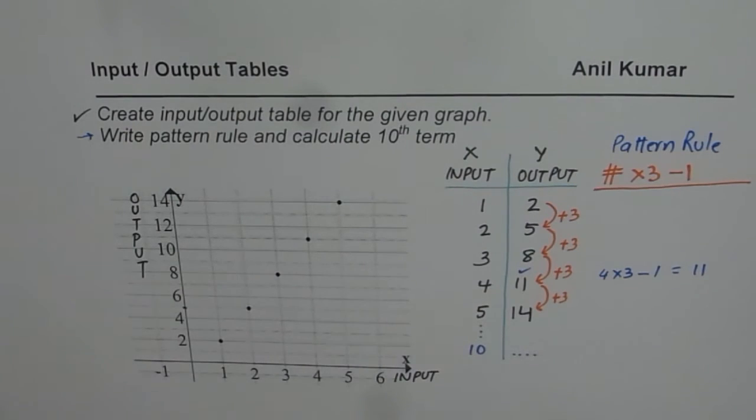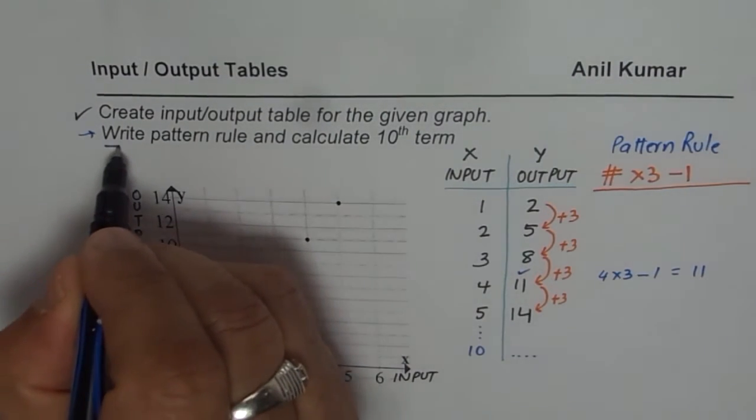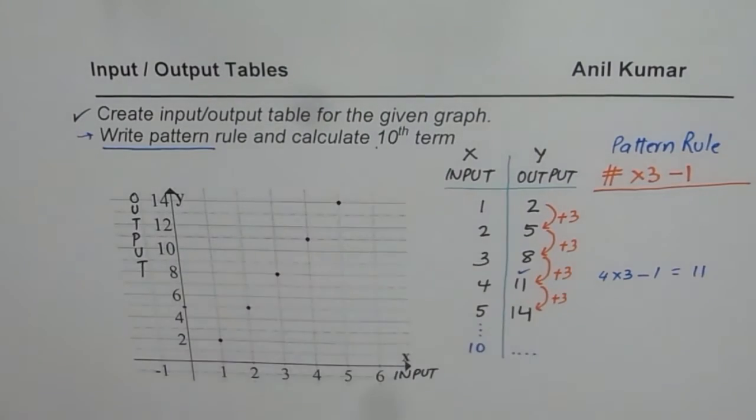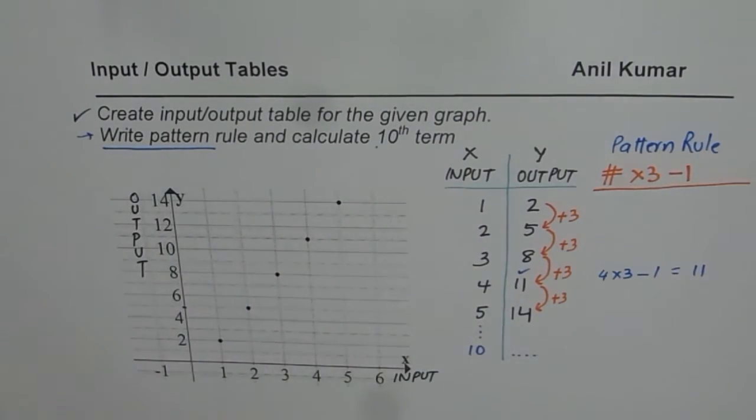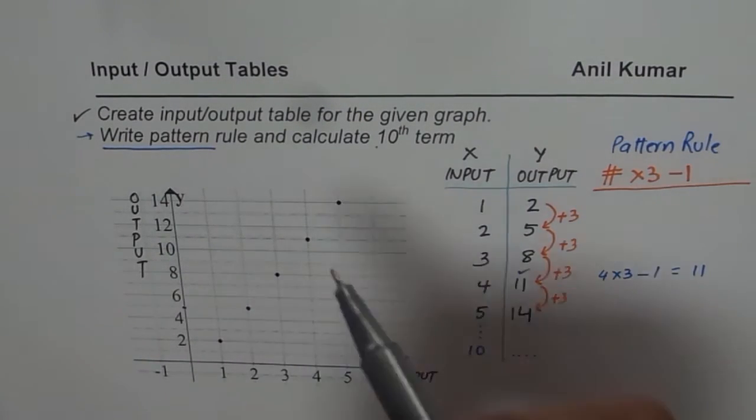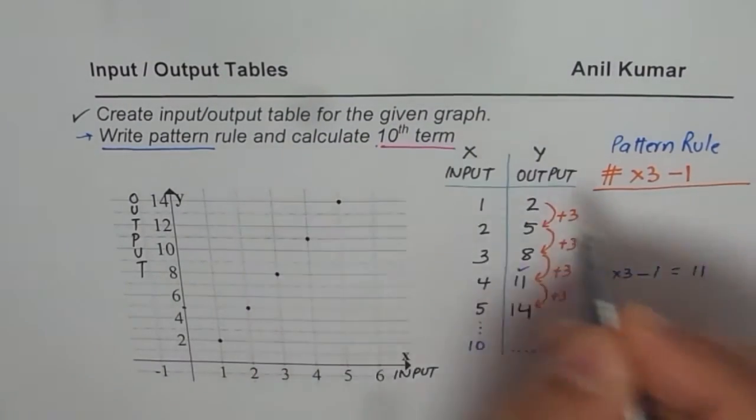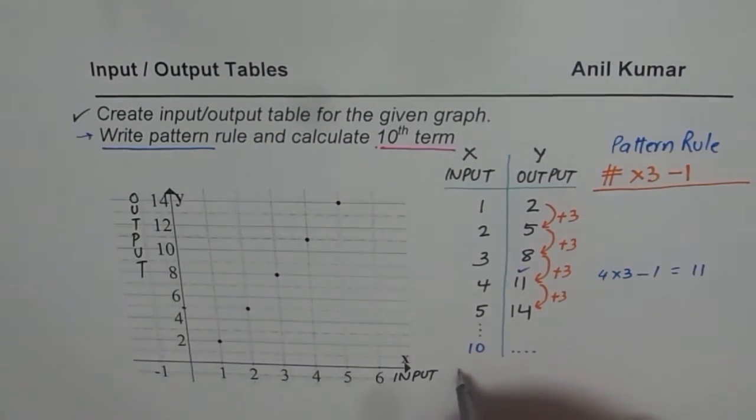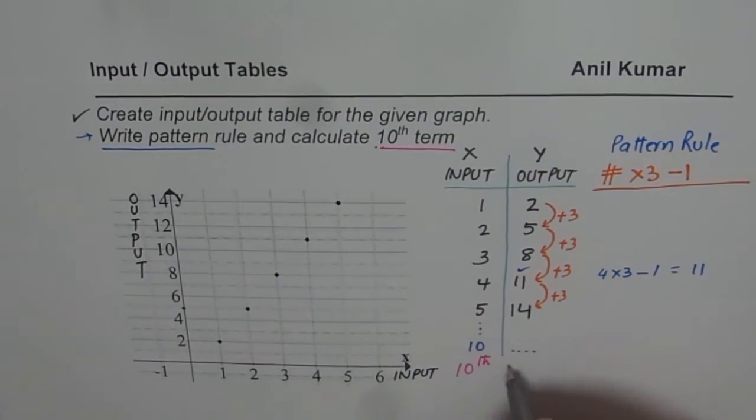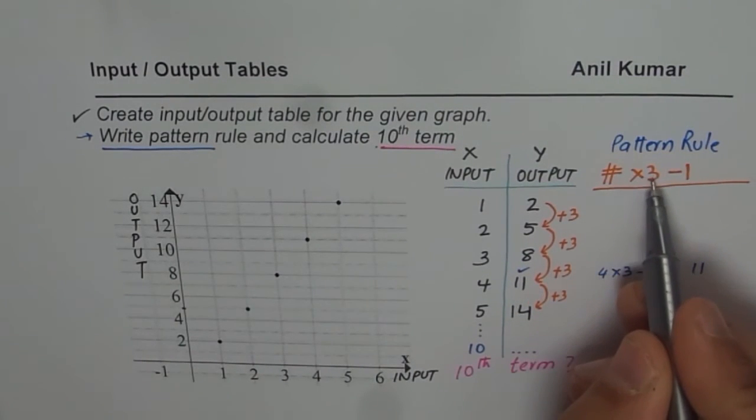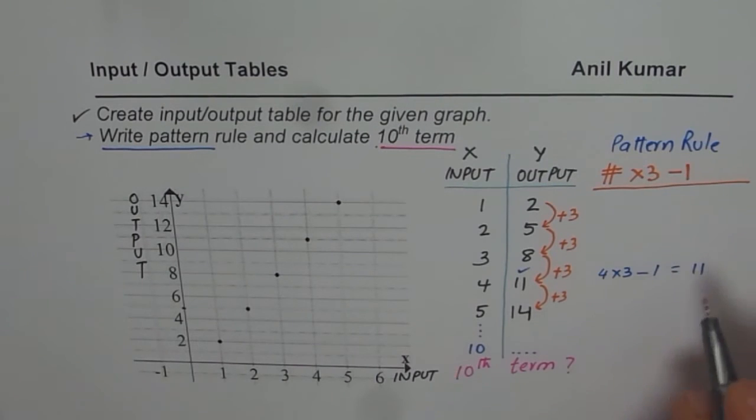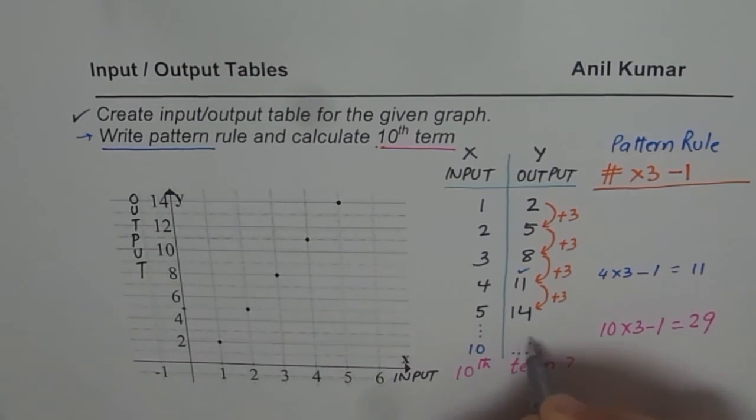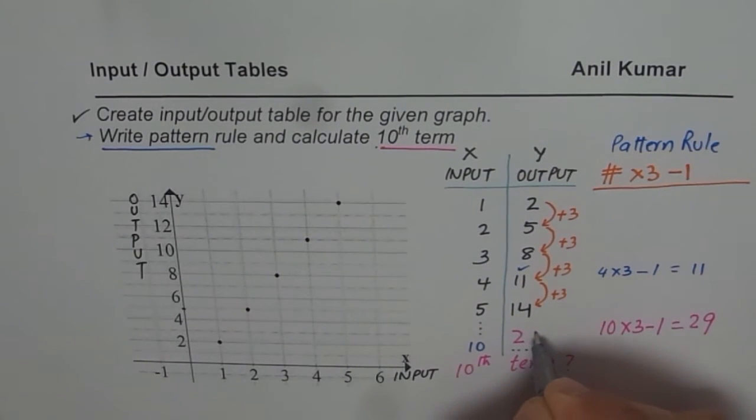Now, we have already given you the pattern rule. You need to find the 10th term. How do you find the 10th term? You should use the pattern rule. So the 10th term should be how much? Times 3 minus 1 is the rule. So let us do 10 times 3 minus 1. 30 minus 1 is 29. So the 10th term should be 29.